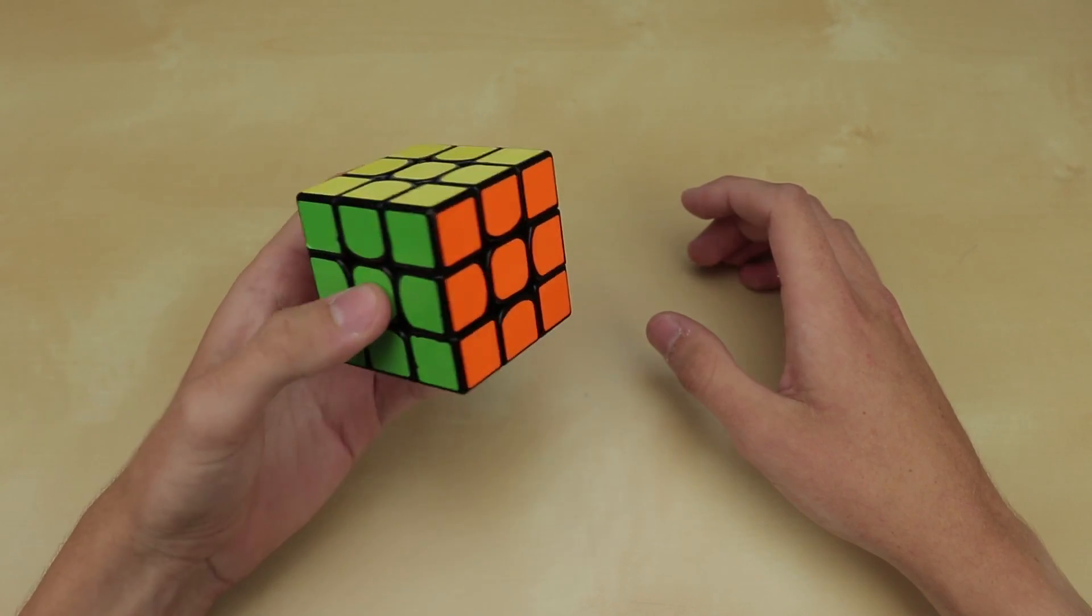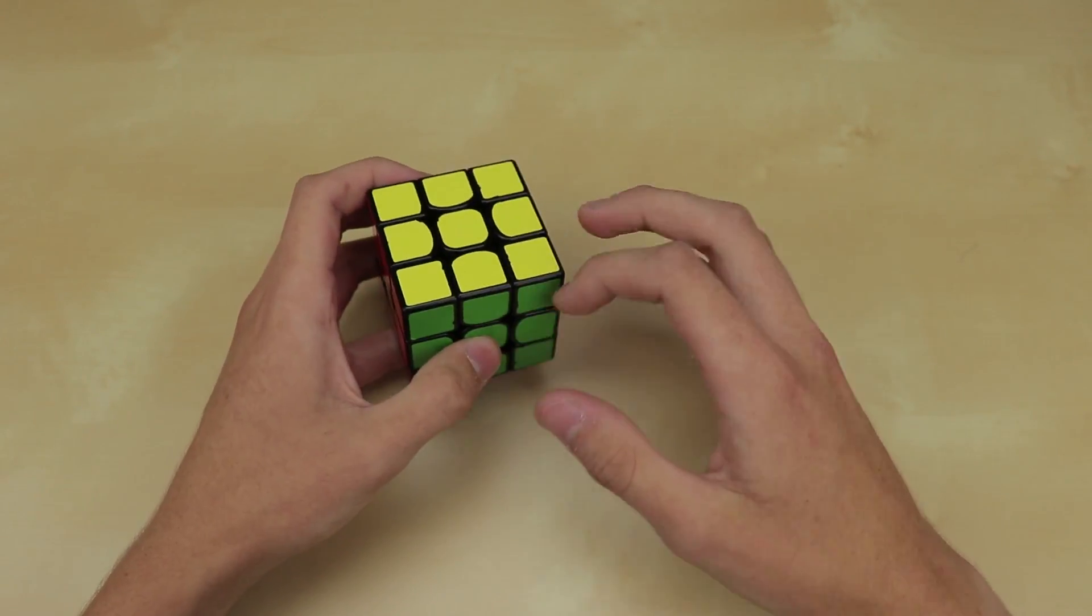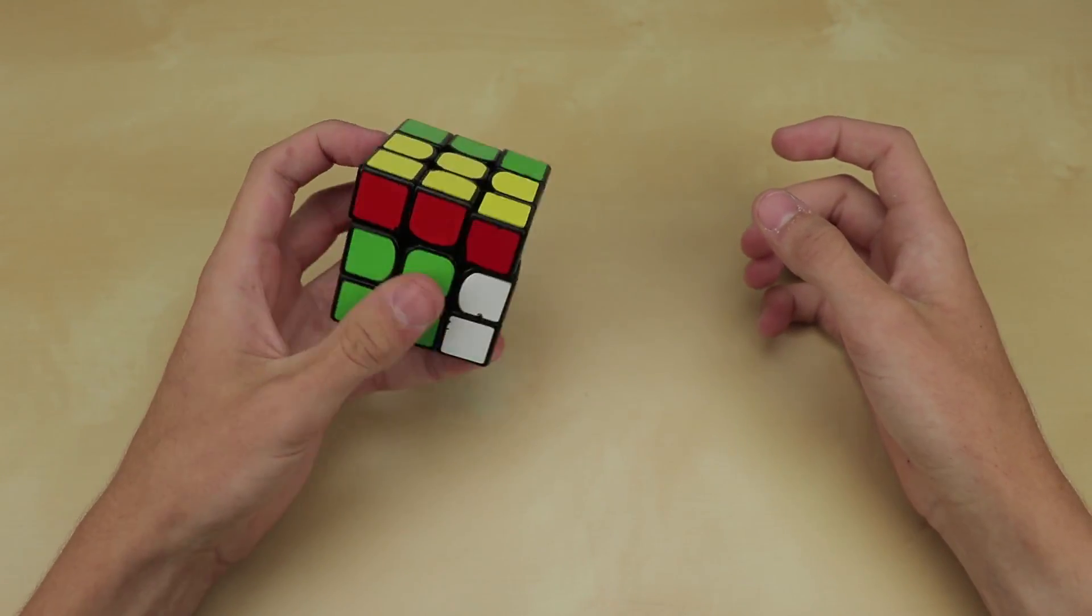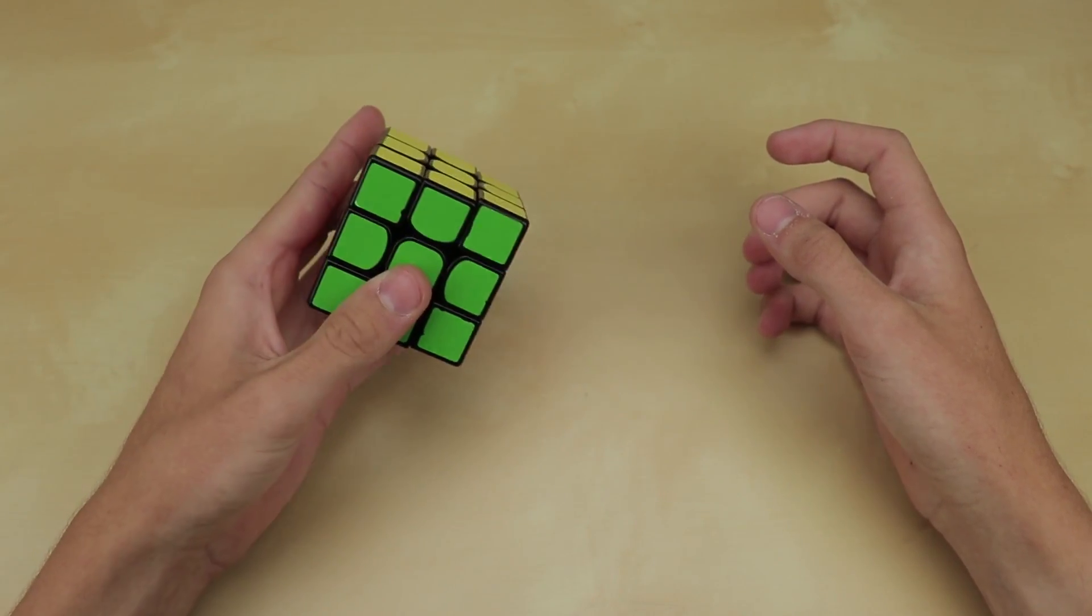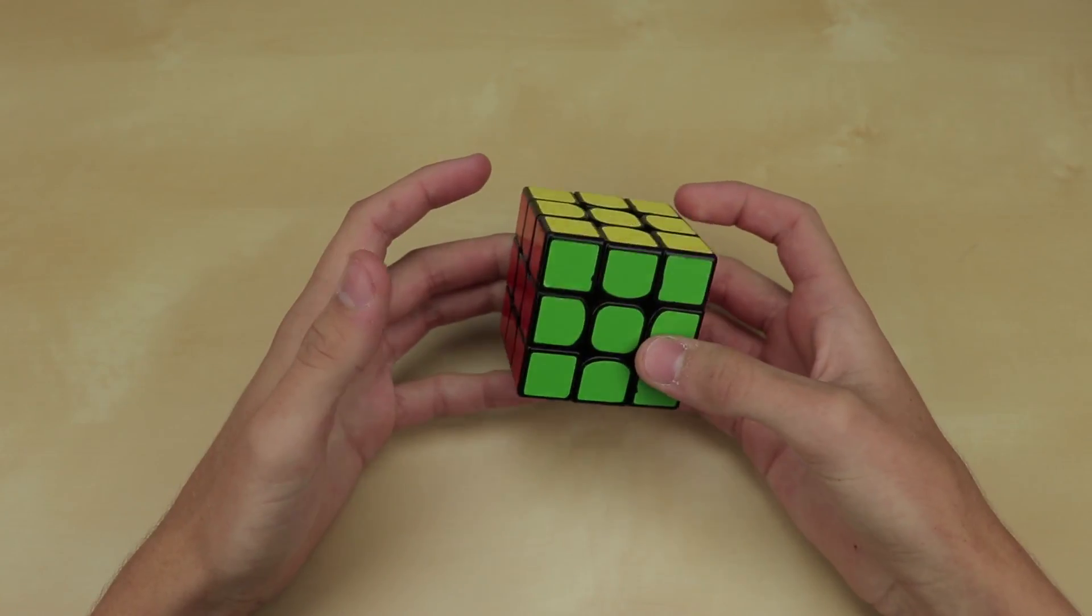I basically just do CFOP with orienting the edges at the beginning so I get to skip the first part of two-look OLL. That's basically what I'm doing when I say ZZ. It's really inefficient, but personally for me it's still faster while doing one-handed.